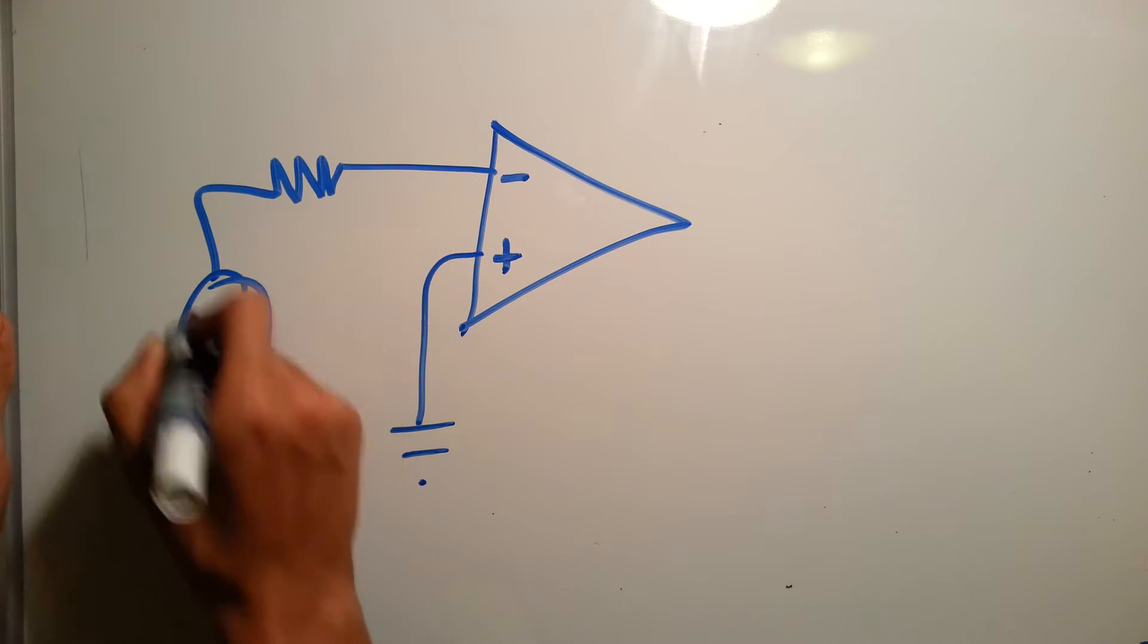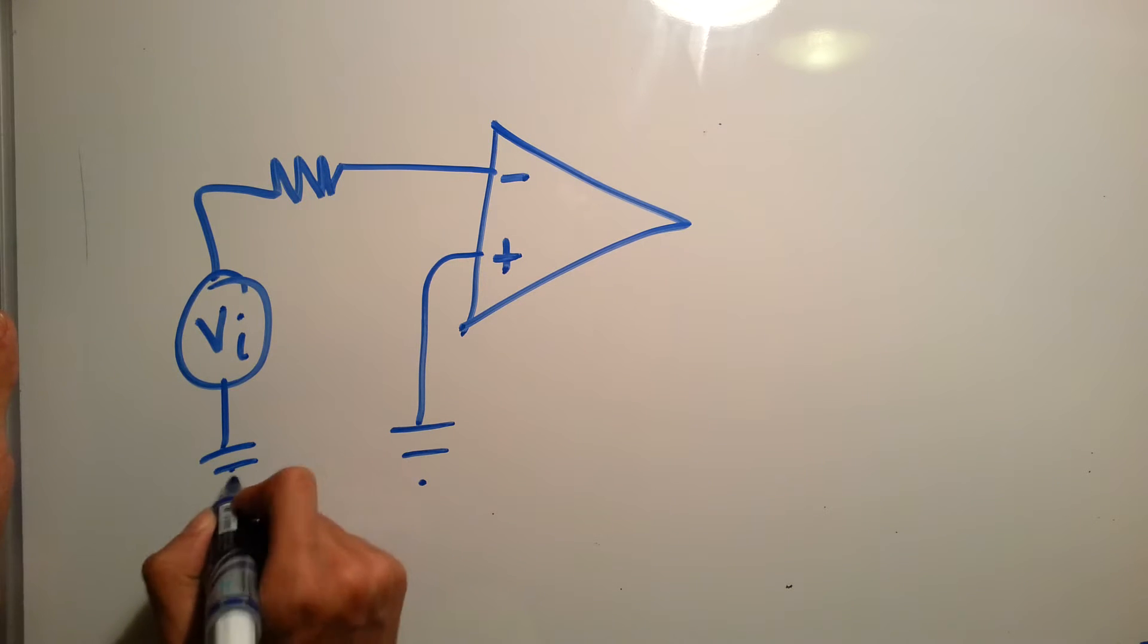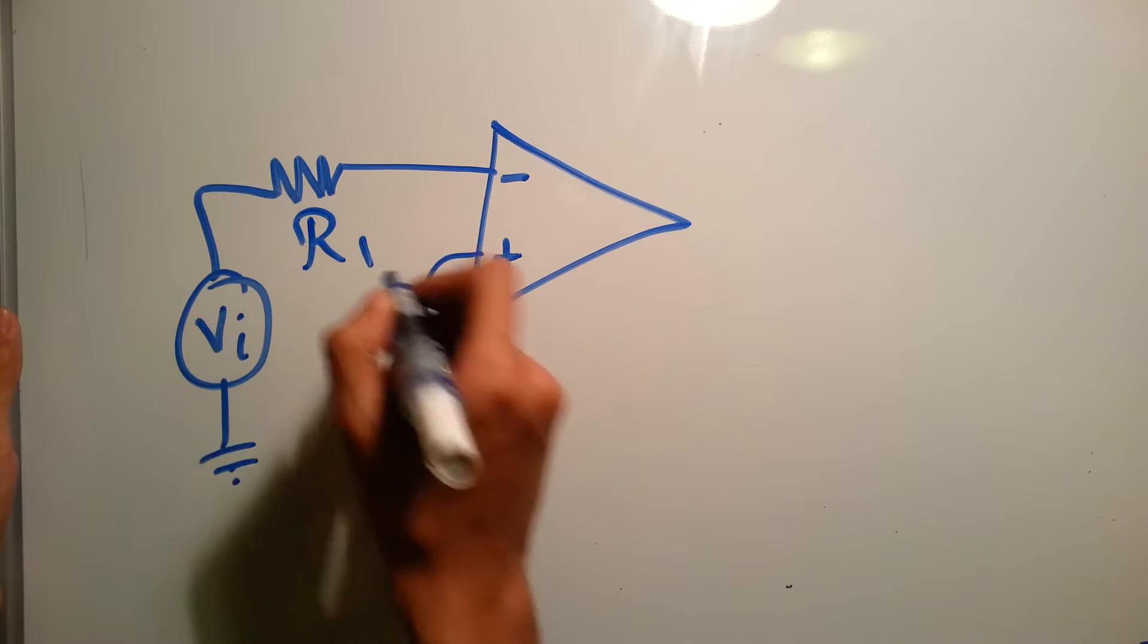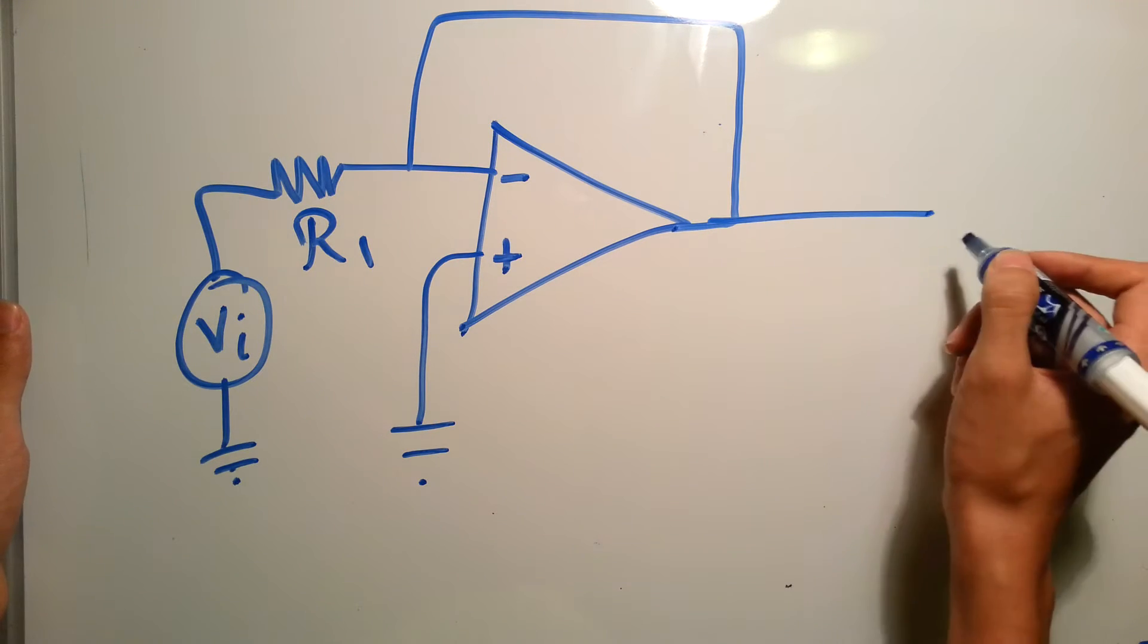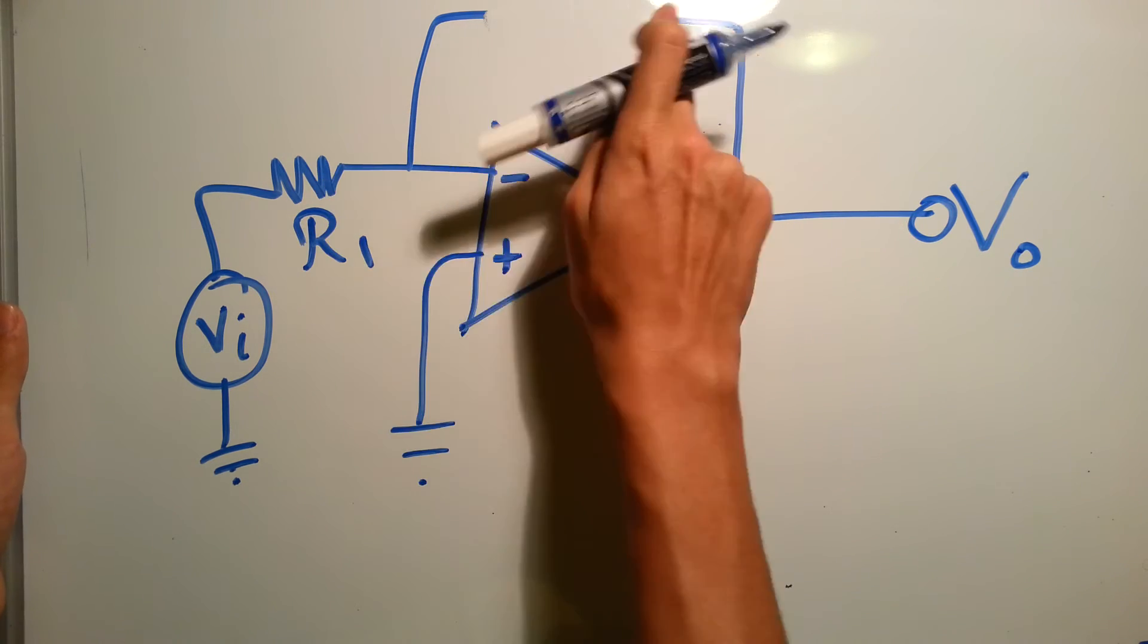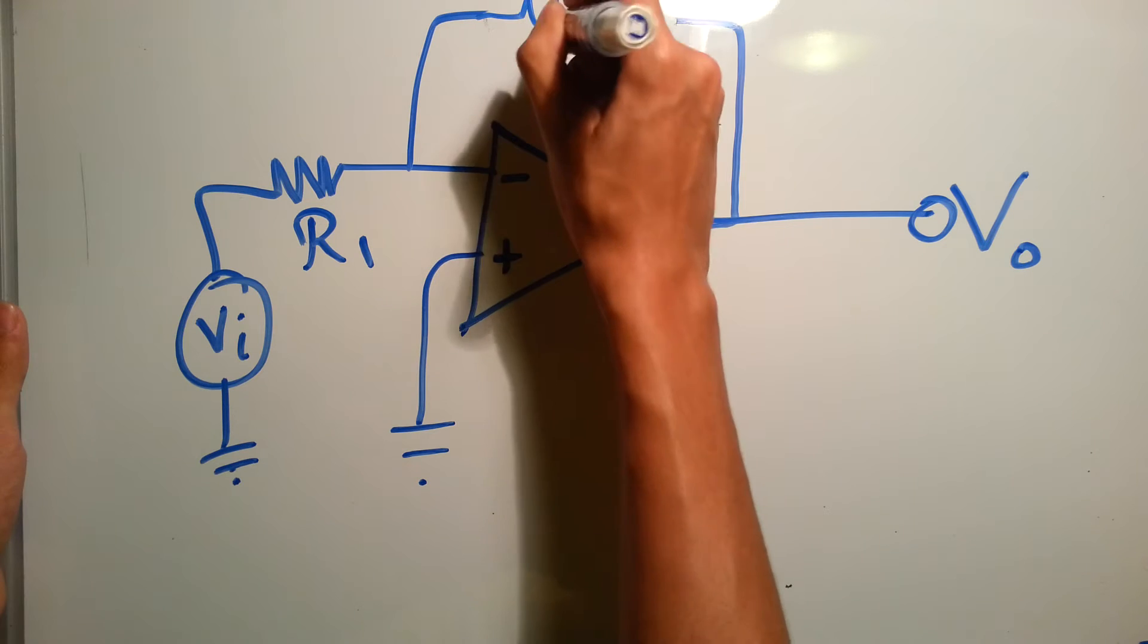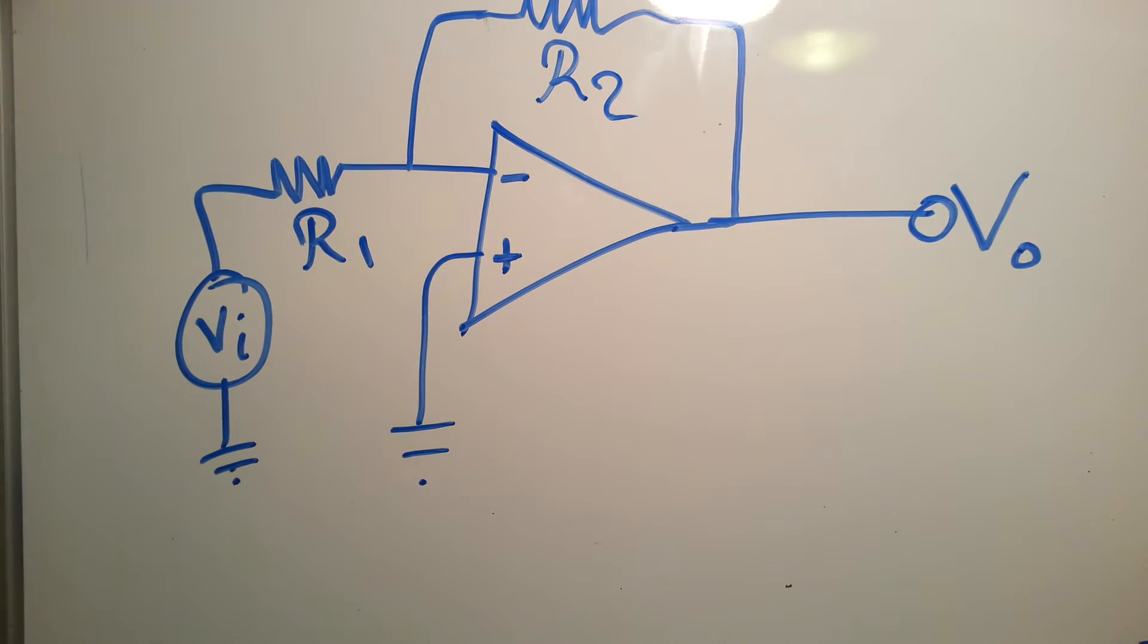resistance to the V input to the ground. It's called this R1, and then you have a feedback connected to the V output through another resistor. Let's call it R2.